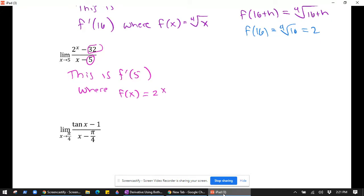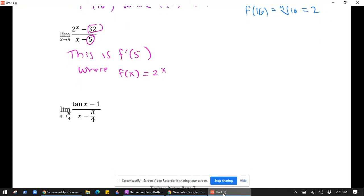And we finish with this one. This is, again, using the x minus a definition. So I can clearly see that this is f prime of pi over 4, where f of x equals, and the function is in the top left there, is clearly tangent of x. Okay.